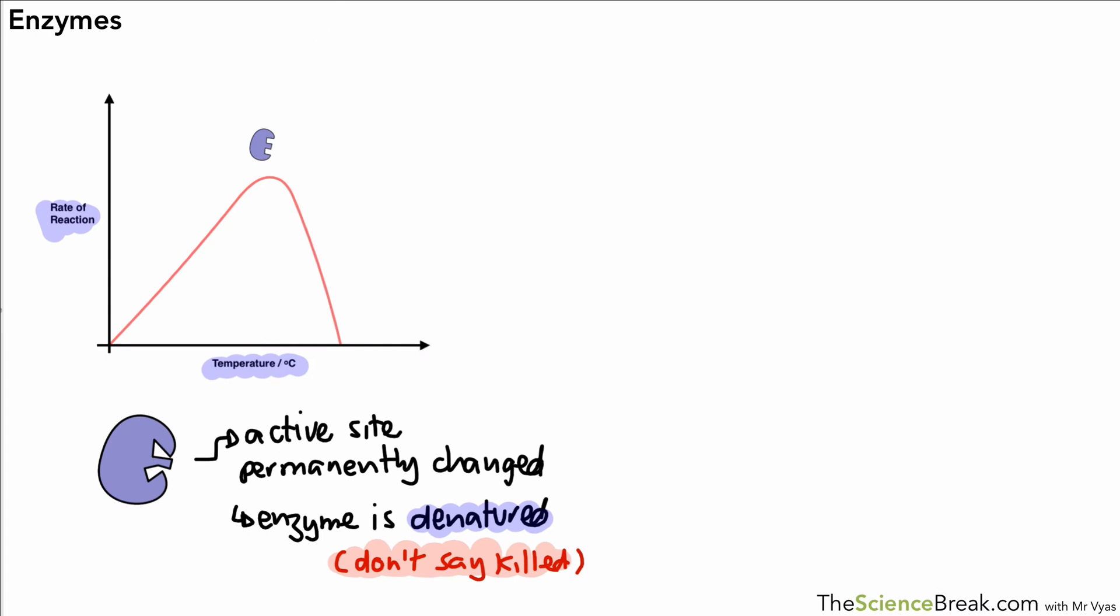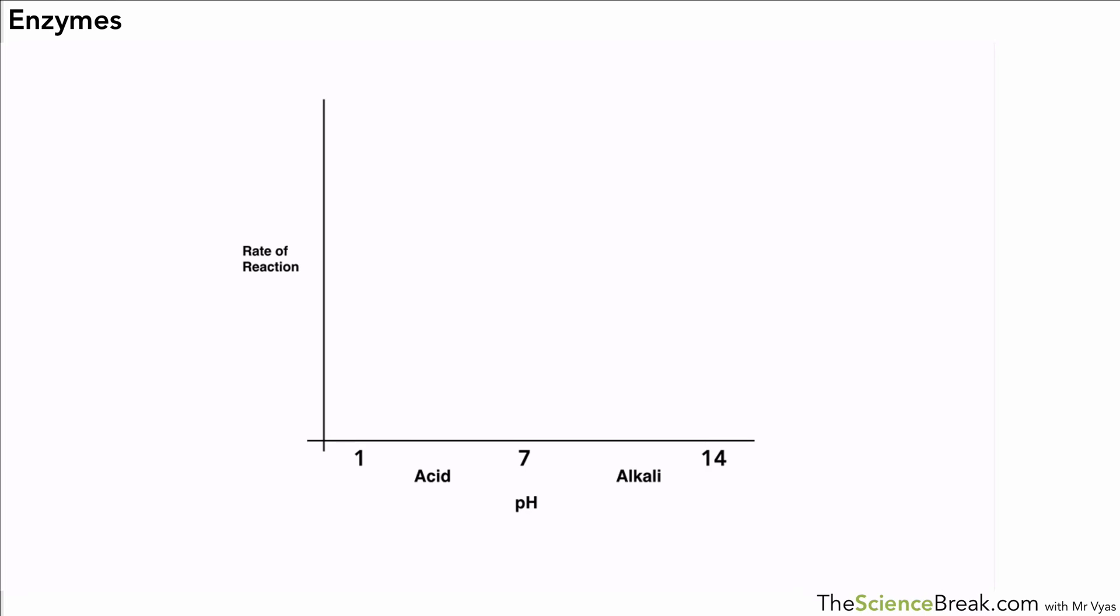The next thing I want to look at is the effect of pH. We've got a pH scale at the bottom there. 1 to 7 being acid, 8 to 14 being alkali. Most enzymes have a shape of graph that looks like this. Around about 7 they work at their maximum rate of reaction. At pHs that are too low or too high they stop working. We can have different enzymes though that work in acid, for example the enzymes in your stomach. They would work very well in acid but not so well in alkali.